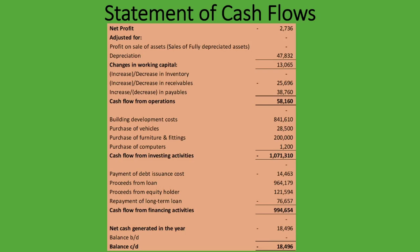The statement of cash flows details the movement from the profits in the statement of comprehensive income. We take into account all non-cash items and accruals to determine the actual movement in strictly cash alone. This statement is prepared using the indirect method — we start with the net profit of 2,736, make adjustments for non-cash items like depreciation and profit on sale of assets, and arrive at the cash generated, the opening balance, and the closing balance.